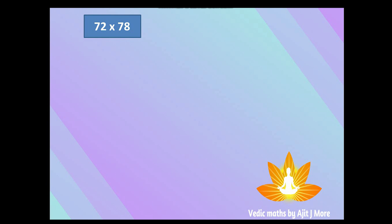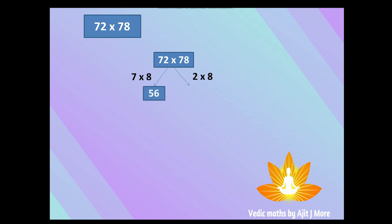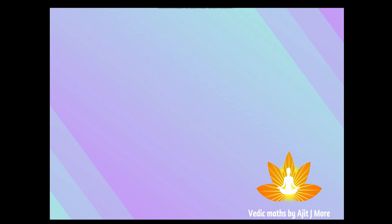Let's take one more example: 72 × 78. What comes before the unit place? That is 7. What comes after 7? That is 8. So 7 × 8 = 56 — that is the first part. And what is at the unit place? That is 2 and 8. So 2 × 8 = 16 — that is the second part. Join them and you get 5616.